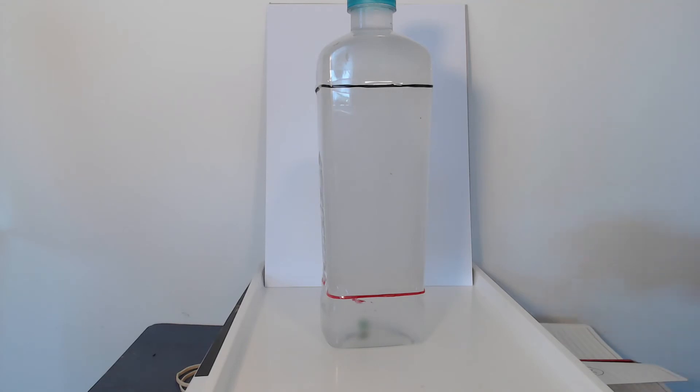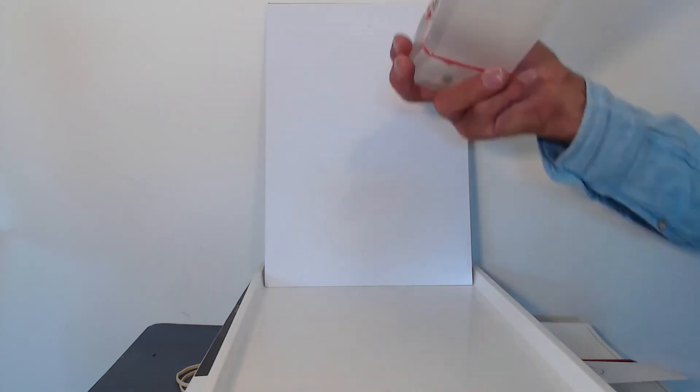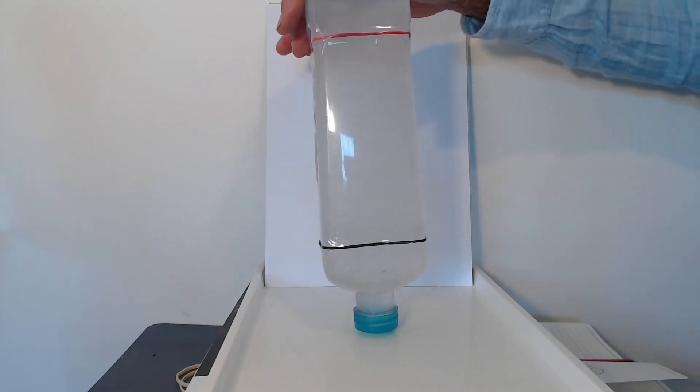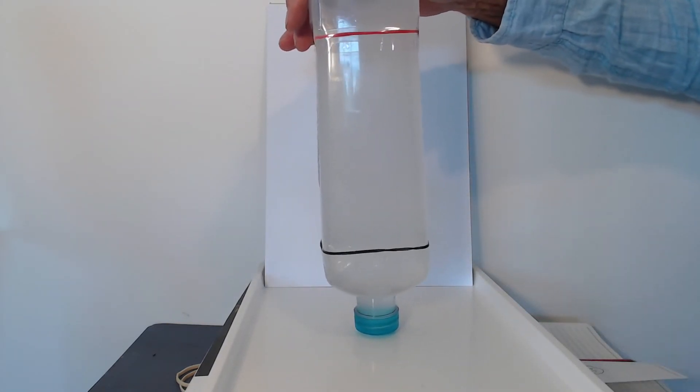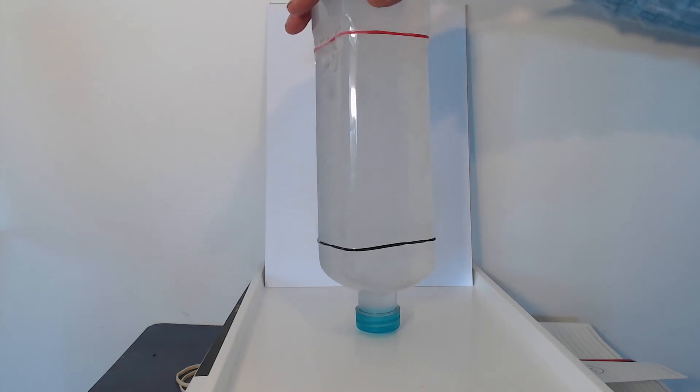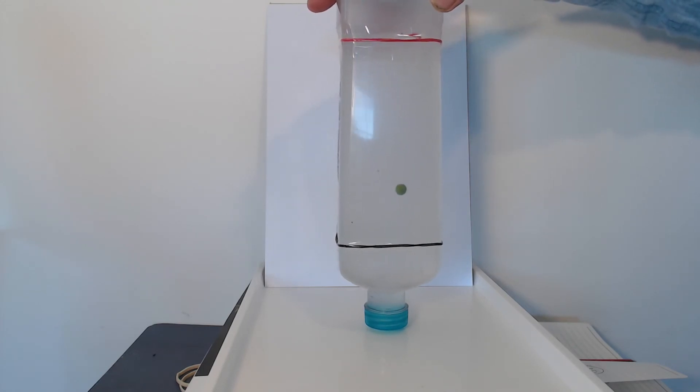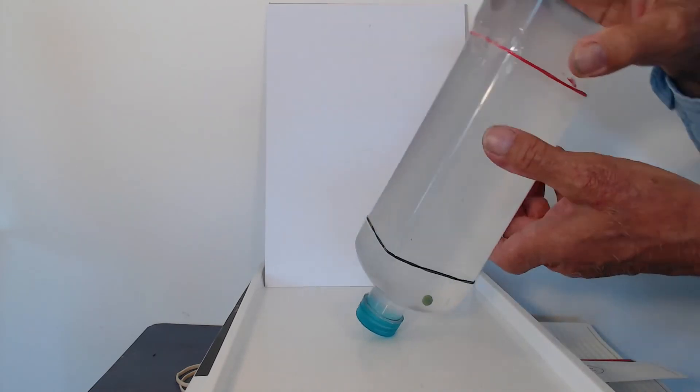And we'll do one more run, and then take the average of the four runs. Upend the bottle, get ready to start timing now. You may not have seen that one as well as I did, but there it is. It's going down here. And stop. 15.49.